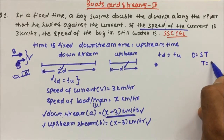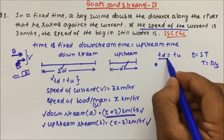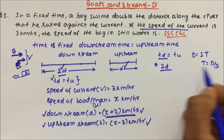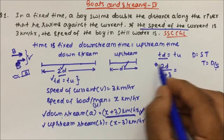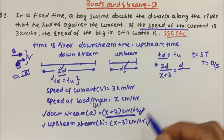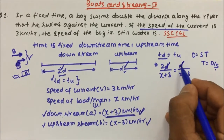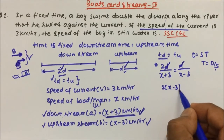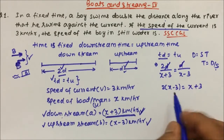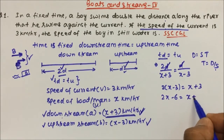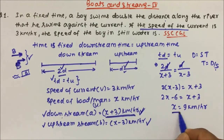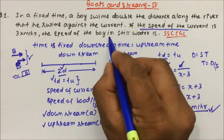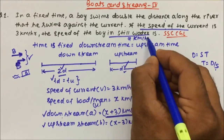Downstream time = 2d / (x + 3) and upstream time = d / (x − 3). Since times are equal, setting them equal: 2d/(x+3) = d/(x−3). The d cancels out, giving 2(x − 3) = x + 3, so 2x − 6 = x + 3, therefore x = 9 km/h. The speed of the boy in still water is 9 km/h.